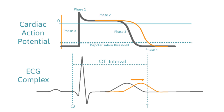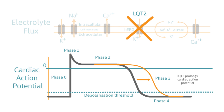This prolonged repolarization of the heart is observed as a lengthening of the QT interval in the electrocardiogram, hence the disorder's name. LQTS can arise from the mutation of one of several genes. A common type of LQTS, LQTS2, arises from a mutation in the human ether-a-go-go-related gene potassium channel, which is responsible for curtailing the cardiac action potential.